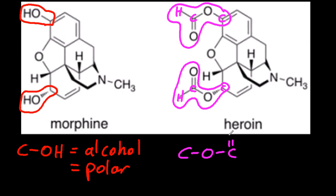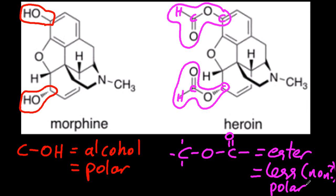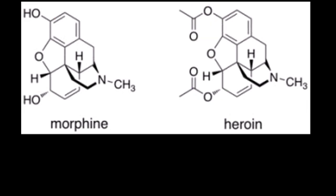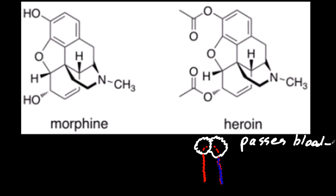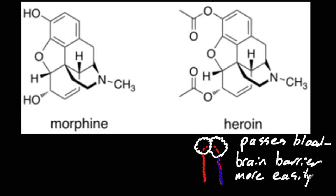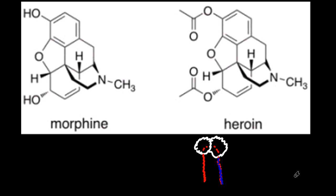Don't forget: like dissolves like. Polar wants to dissolve in polar, and non-polar wants to dissolve in non-polar — or you could argue less polar for esters. That means the blood-brain barrier, which screens out mostly polar chemicals, will allow non-polar heroin to pass through much more easily than the more polar morphine. So heroin is going to be more active in the brain.